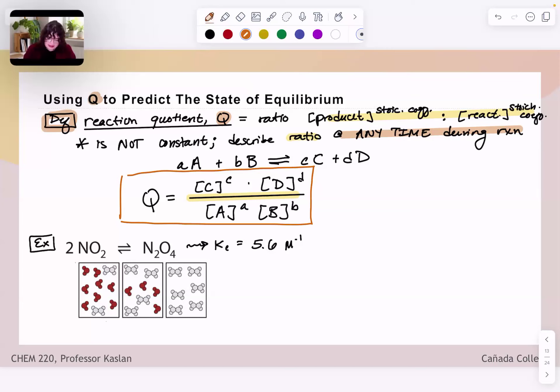And the answer for that is if we know what the equilibrium constant is and then we know what the reaction quotient is at some time T during the reaction, then we can use our knowledge about how those two quotients, those two expressions, those two ratios are related to figure out how our system is going to establish its equilibrium.